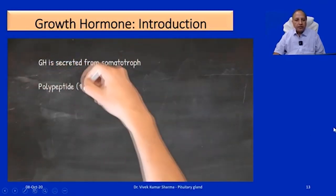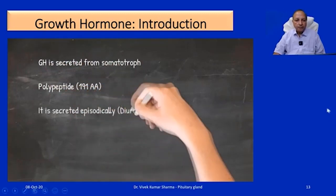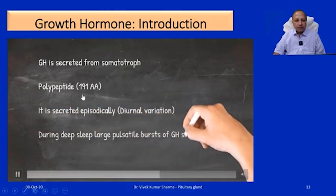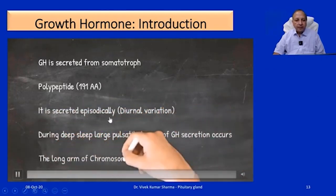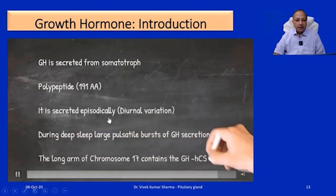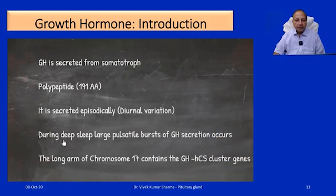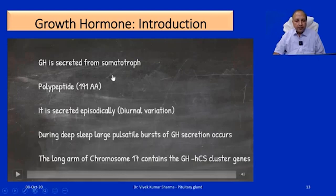Growth hormone is secreted from the somatotrophs and is a polypeptide. It is secreted episodically with a diurnal variation. During deep sleep, there is a large pulsatile burst of growth hormone secretion. If there is insomnia or sleep abnormalities, growth hormone secretion may be affected. Growth hormone is produced from the long arm of chromosome 17, which contains the GH-HCS cluster genes.